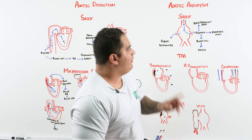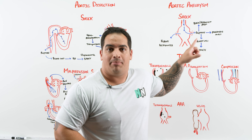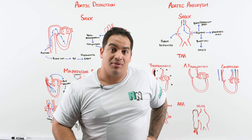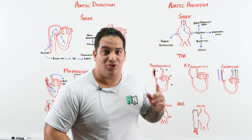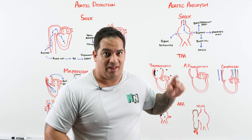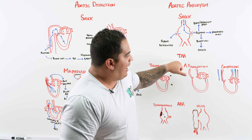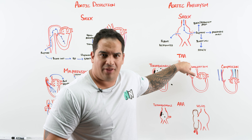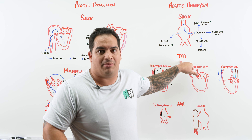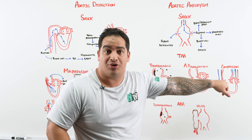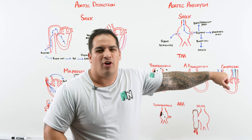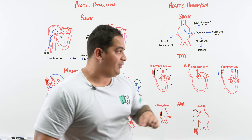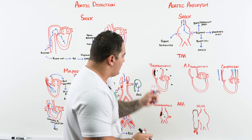Putting it together: a patient presenting with low blood pressure, belly or back pain, a pulsatile abdominal mass, and possibly flank ecchymosis — think shock potentially due to a ruptured aortic aneurysm. For thoracic aortic aneurysms, they can generally be asymptomatic or present with mild chest pain, but there are important complications to watch for.